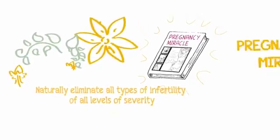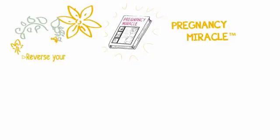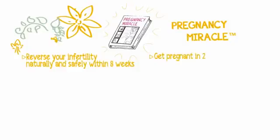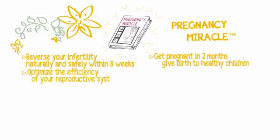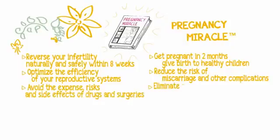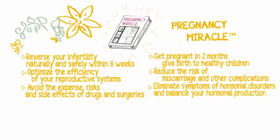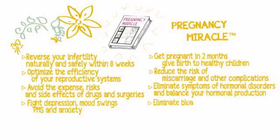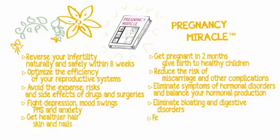The Pregnancy Miracle program will enable you to reverse your or your partner's infertility naturally and safely within eight weeks, get pregnant in two months, optimize the efficiency of your reproductive systems, reduce the risk of miscarriage, avoid the expense and side effects of drugs and surgeries, eliminate symptoms of hormonal disorders, fight depression and mood swings, and feel lighter, healthier, and more energetic.